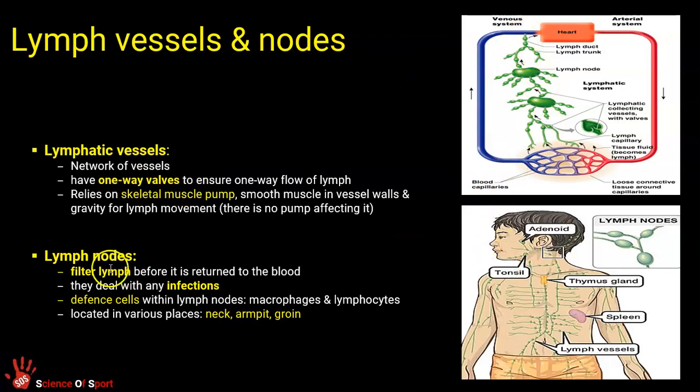And then, of course, the lymph nodes. We've got various lymph nodes that filter, clean, attack any infections. So they are there. They're very much incorporating our white blood cells. They are there, our defensive cells. They are the important part of our immune system that attacks infections and bacteria and toxins.